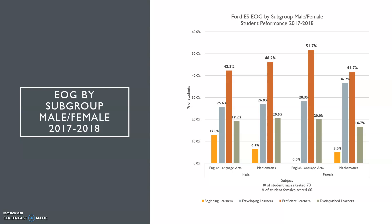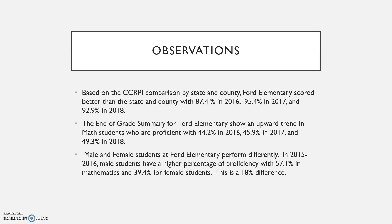In 2017-2018, a similar trend continued with mathematics scores of 46.2 percent for males and 41.7 percent for females. There were 78 males tested and 60 females tested. Based on the CCRPI comparison by state and county, Ford Elementary scored better than the state and county. The End of Grade summary for Ford Elementary shows an upward trend in math proficiency: 44.2 percent in 2016, 45.9 percent in 2017, and 49.3 percent in 2018.